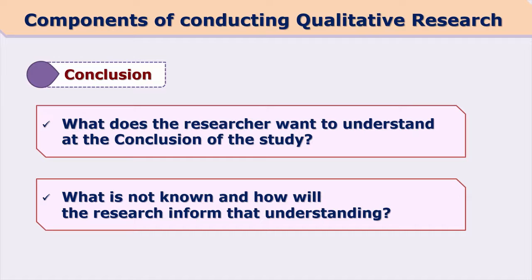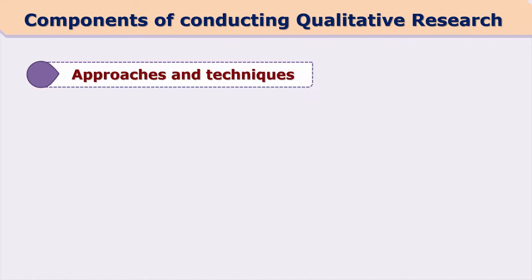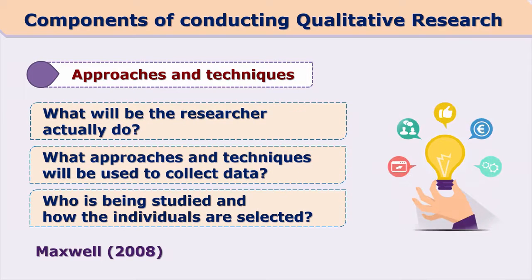What does the researcher want to study as a conclusion of the study? What is not known and how will the research inform that understanding? The researcher conducts qualitative analysis because he or she wants to find out some conclusions — what is understood at the end of the study. Goals are decided, we want some conclusions, and for that in a particular context we want to proceed ahead with the study.